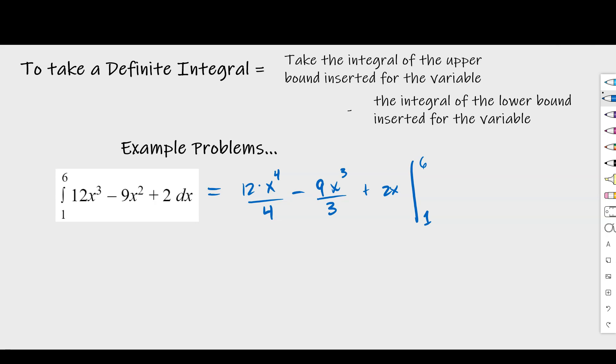But first, let's go ahead and simplify this a bit. So we're going to say that ends up being 3x to the fourth minus 3x to the third plus 2x, and then the same symbol of six and one. Now at this point, I'm basically going to take this upper bound and plug it in where the x values are effectively,